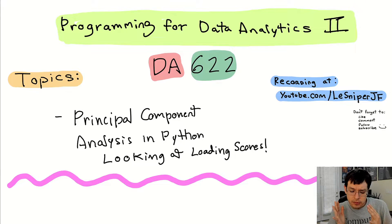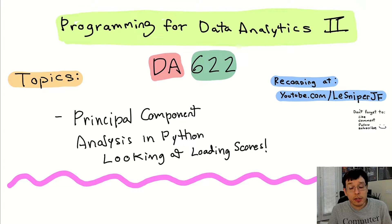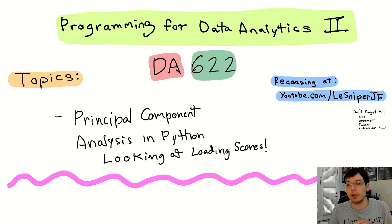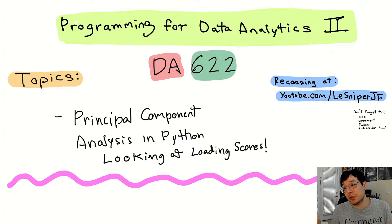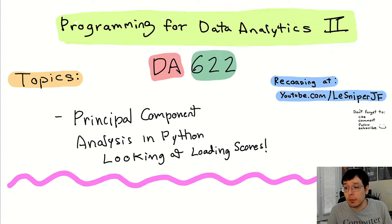So you run your principal component analysis, come up with a really high variation, you know PC1 has what it takes. And now you want to see in Python what features it's made of. I forgot to show you the function — it's very easy, basically just one line of code. But it's kind of important, so let's take a moment to show you what that is.